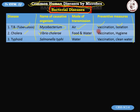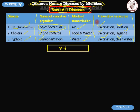The second bacterial disease is cholera, caused by Vibrio cholerae. It is spread through food and water. Preventive measures: vaccination and hygiene — clean practices in food and water. The third is typhoid, caused by Salmonella typhi. The mode of transmission is water — unclean water. Preventive measures: vaccination and clean water. We should always drink boiled water.